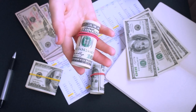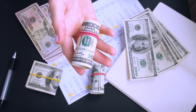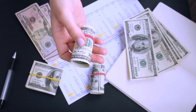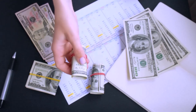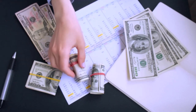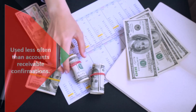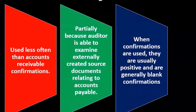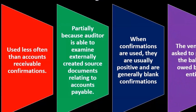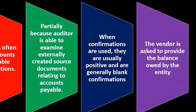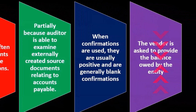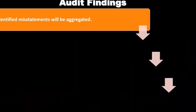Remember, all the rules with confirmations are essentially the same here. The auditor performs the confirmation — not on the company letterhead — and sends them directly to the vendors outside of the company. The vendor then sends them directly back to the audit firm, not to the company, keeping the company out of it. The vendor is asked to provide the balance owed by the entity.